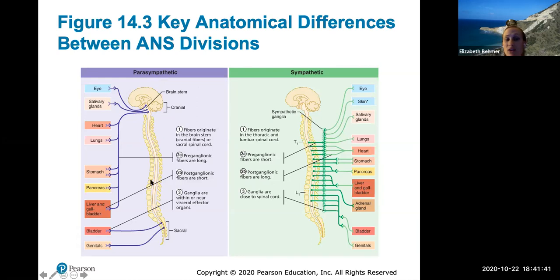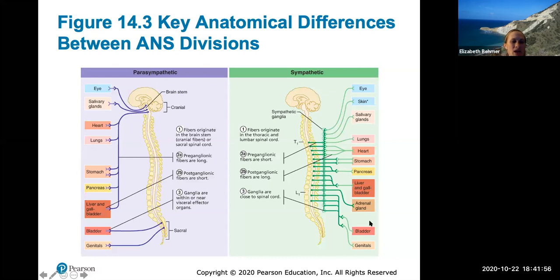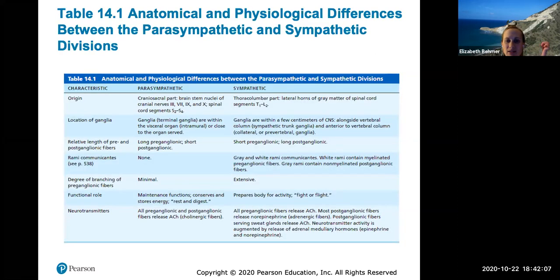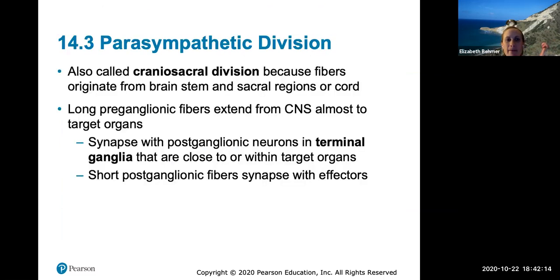The parasympathetic is known as the craniosacral division, and the sympathetic as the thoracolumbar division. Knowing the length of their preganglionic and postganglionic fibers is important, as is what each division does in opposite action to the other — on the heart, lungs, blood vessels, salivary glands, and digestive tract. The parasympathetic craniosacral division has long preganglionic fibers extending from the CNS almost all the way to target organs, synapsing with postganglionic neurons in terminal ganglia close to or within those organs.